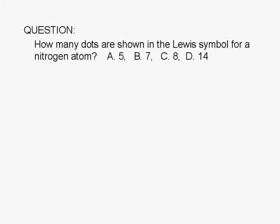How many dots are shown in the Lewis symbol for a nitrogen atom? 5, 7, 8, or 14.